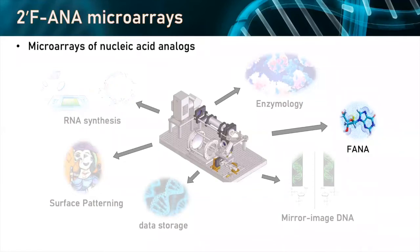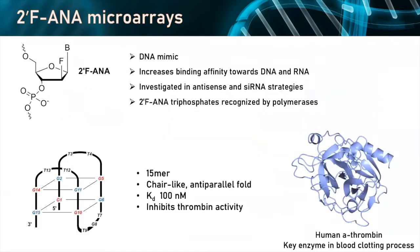Let me move on to some of the recent work we're doing with microarrays, where we don't just do DNA — we also synthesize chemical modifications in situ on those surfaces. I'm going to be focusing on FANA for this talk. FANA is an analog of arabinose where the 2' hydroxyl has been replaced by a 2' fluorine. It's a DNA mimic that increases binding affinity towards DNA and RNA. It's heavily investigated in antisense and siRNA strategies, and the triphosphates of FANA can be recognized by some polymerases, making it interesting in aptamer research.